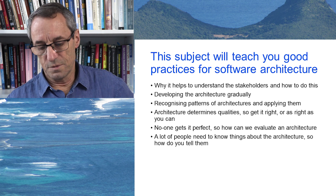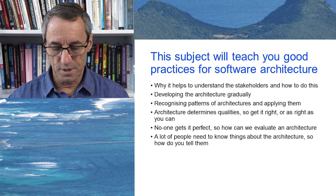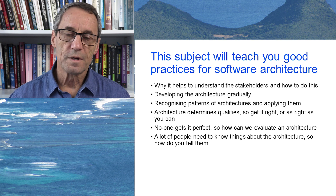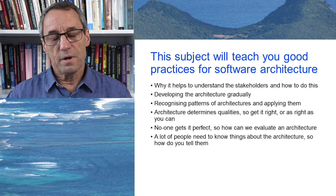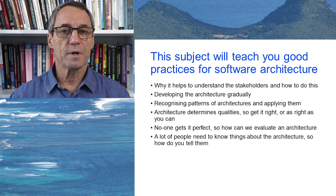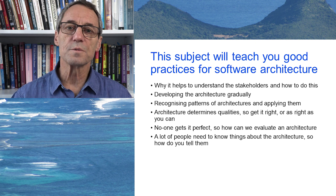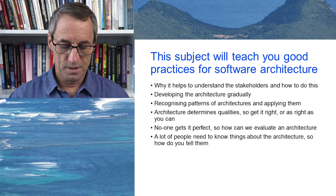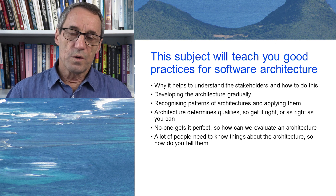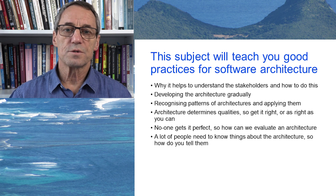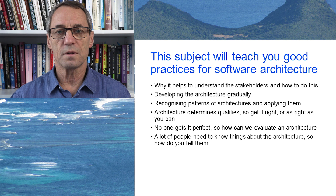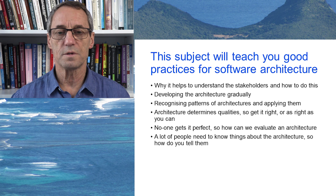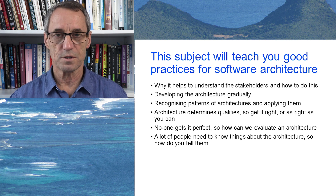In this subject we'll teach you good practices for software architecture — good, sound practices. Despite architecture being creative, some things work better than others. The first thing is it helps enormously to understand who the stakeholders are and what they care about. We'll develop an architecture gradually, because an architecture is sufficiently complex that we have to break it down from a high-level view down to lower-level views. It's very difficult to develop an architecture starting from the fine detail.